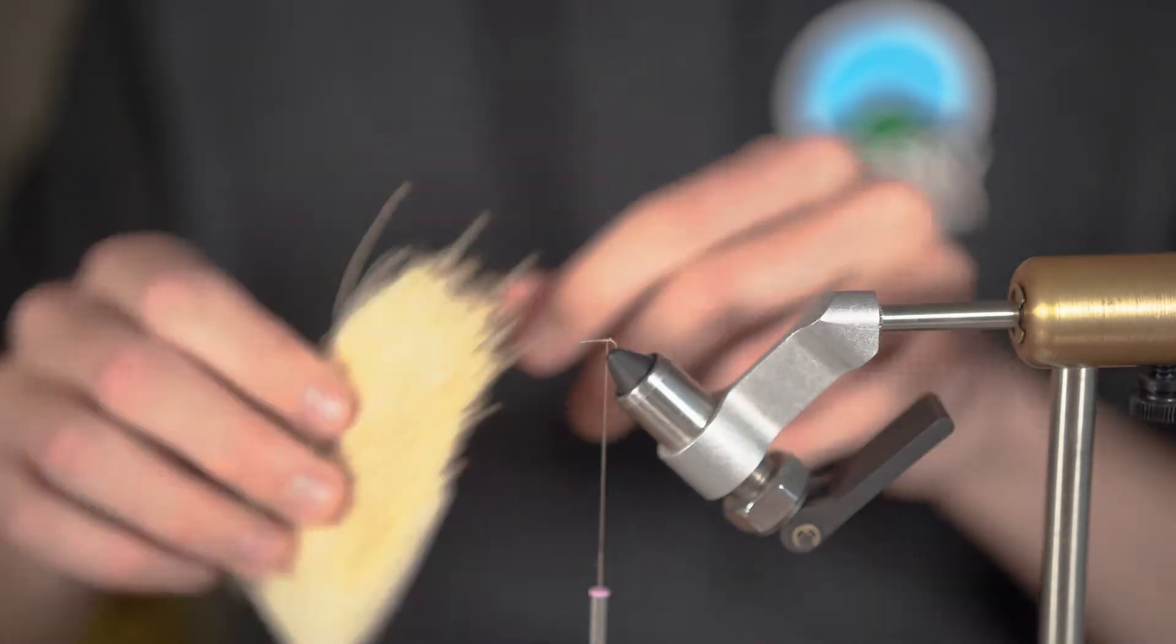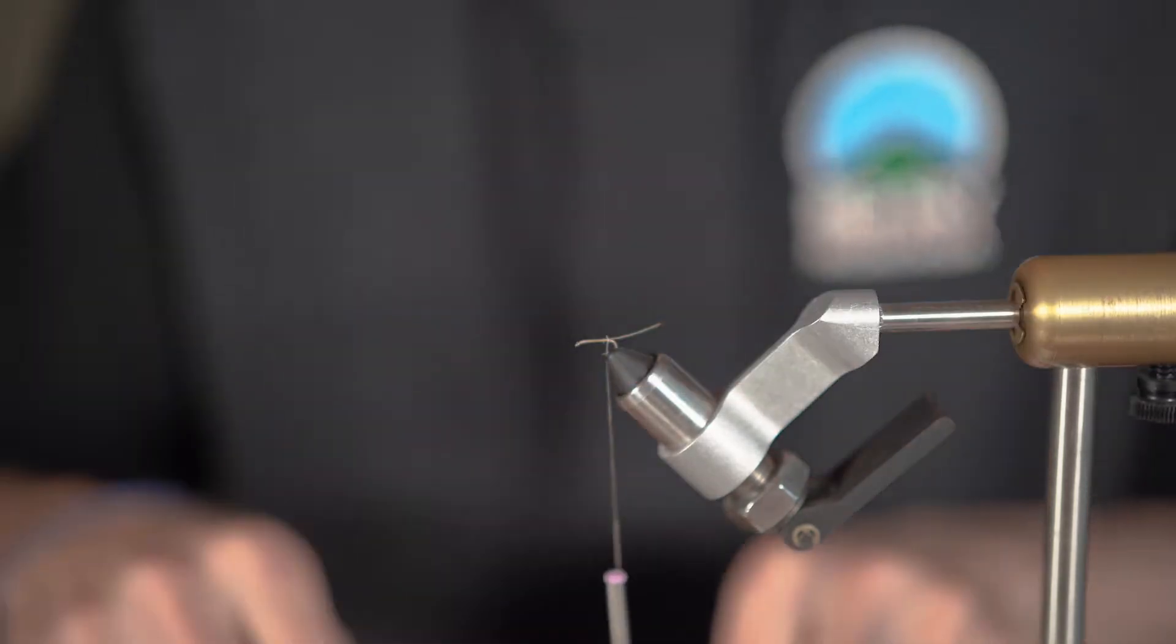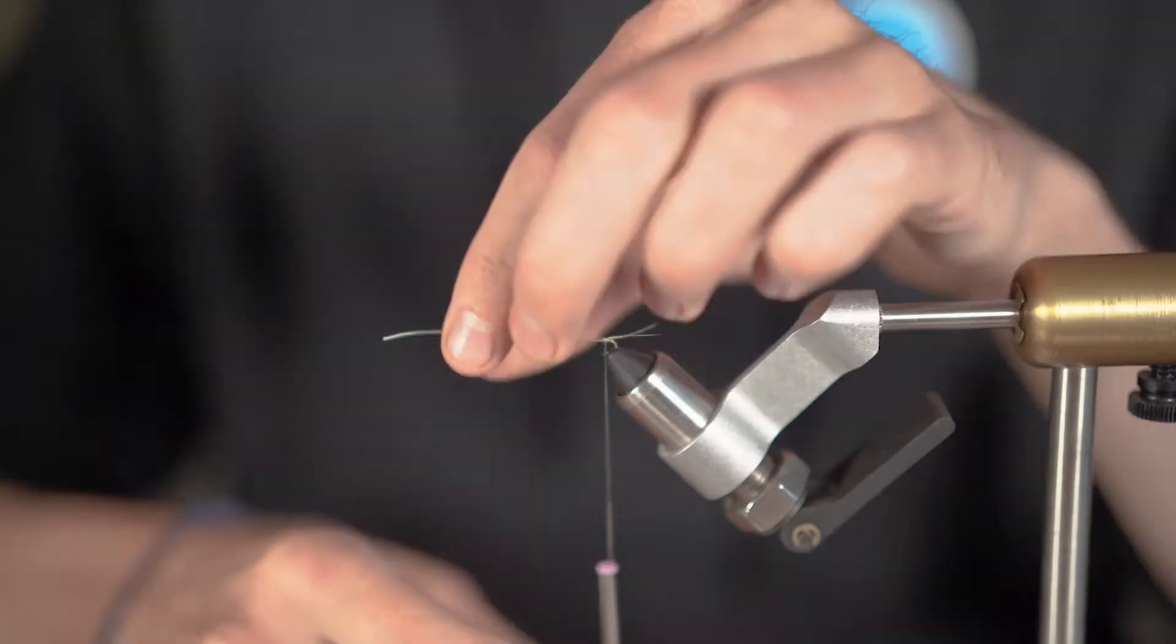Now grab out two hairs from your bleached elk patch and carefully tie those in at the back one by one, a hook shank in length, and place an eighth to a quarter inch apart.